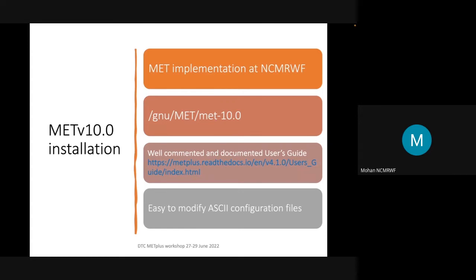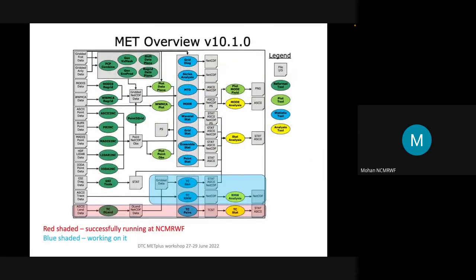The MET TC module is unique compared to other MET modules: while other modules process data in GRIB or NetCDF format, MET TC works with the ATCF (Automated Tropical Cyclone Forecast Format) ASCII format. MET TC also produces unique characteristics beyond track and intensity, including verification of rapid intensification and weakening, genesis potential, and radius of maximum wind errors. At NCMRWF, TC DLAND, TC PAIRS, and TC STAT are successfully running. TC GEN and the rapid radius of maximum wind analysis are still in progress.